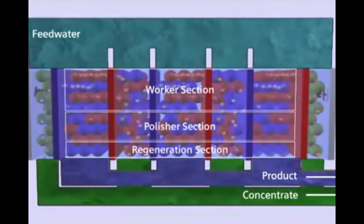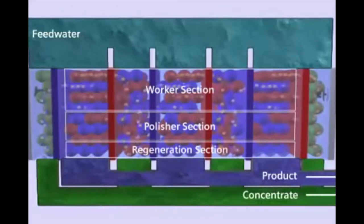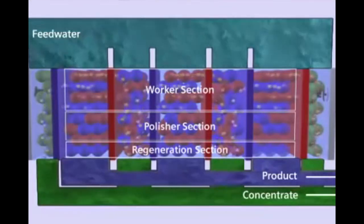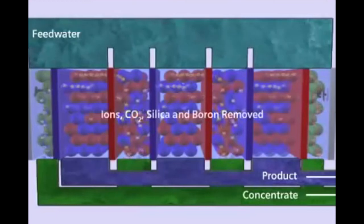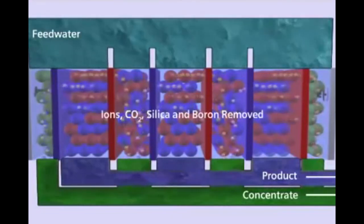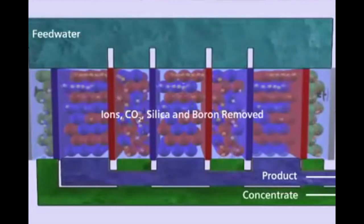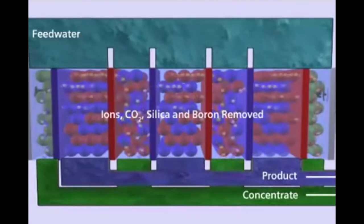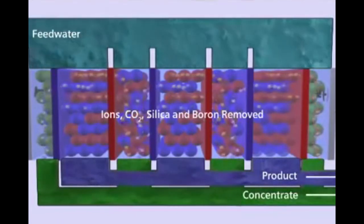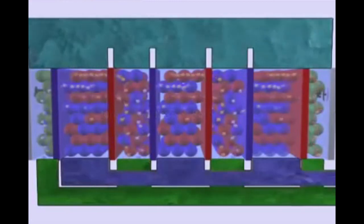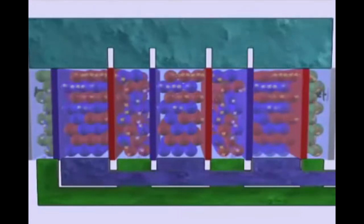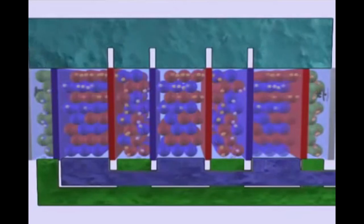IonPure CEDI systems are more effective than other electrodeionization systems when it comes to removing dissolved materials such as salts, acids, and bases, as well as weakly ionized materials such as dissolved organics, silica, boron, and carbon dioxide. This continuous regeneration process also eliminates pH shock and greatly extends the life of the resins.